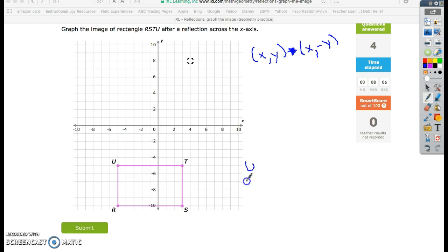So I have U, T, S, R. Okay, U, T, S, R are the four points, and those four points have coordinates, and I'm going to write down those coordinates on the side of my screen here.